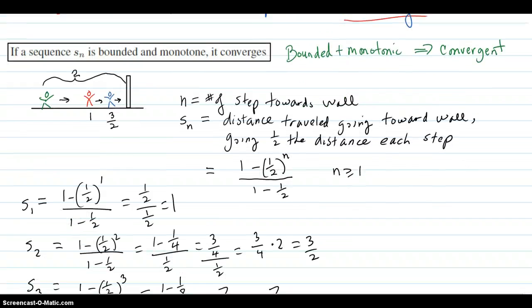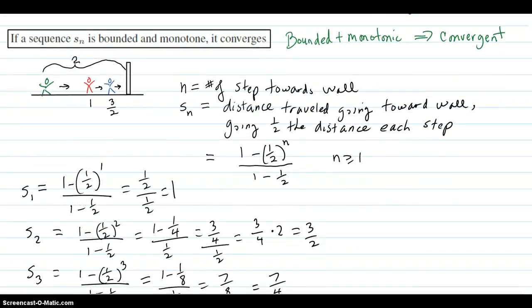So here's a big theorem. If a sequence is bounded and monotonic, then it converges. So it's not enough just to be bounded, and it's not enough for it just to be monotone or monotonic.